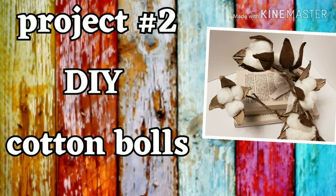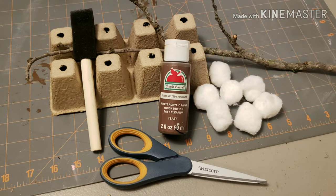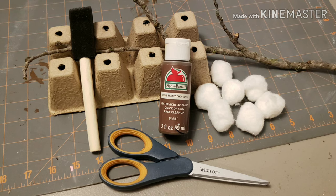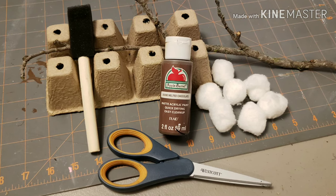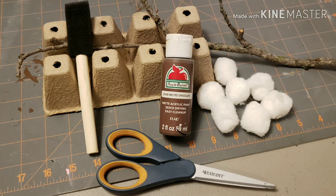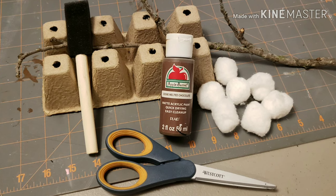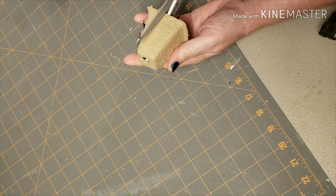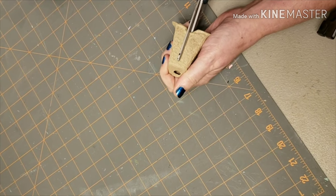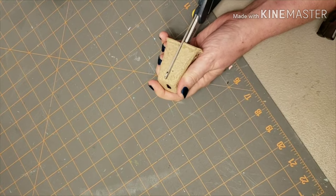Next on to project number two, the DIY cotton bolls. For this I used some peat pots that I had on hand, my scissors, a foam brush, some melted chocolate paint from Apple Barrel, a twig from the backyard, and some cotton balls. Now I'm just cutting each side of that peat pot.